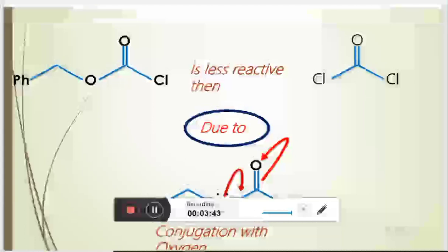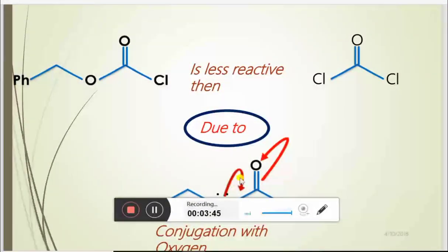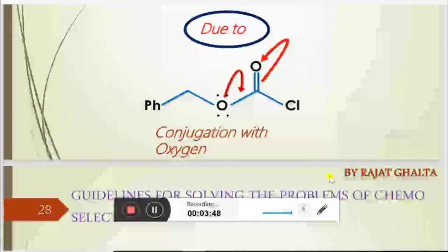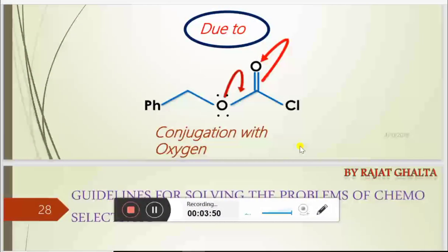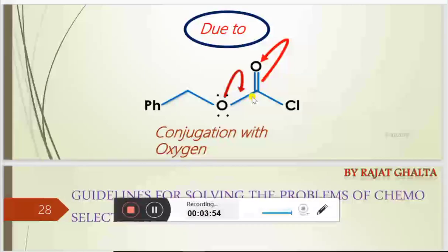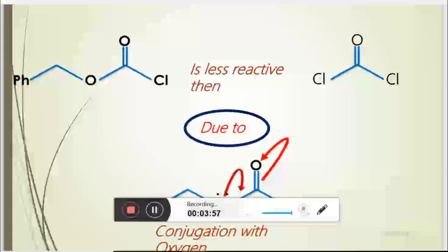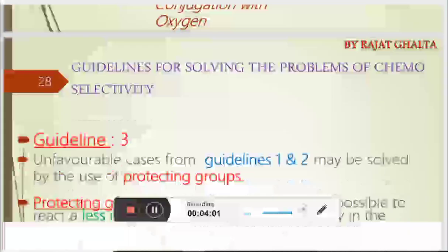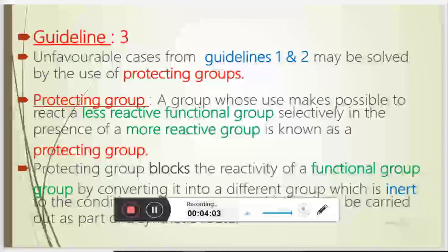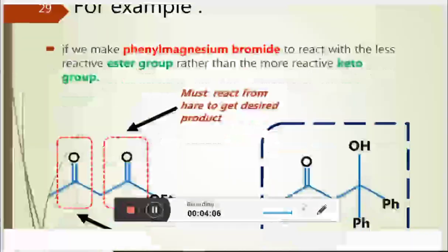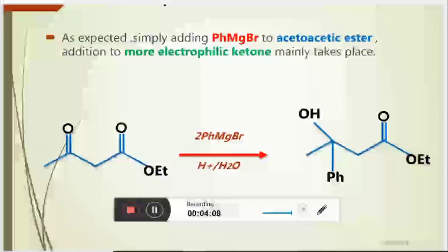You can also see the involvement of neighboring group participation, and then you would have the keto and enol forms. What happens next is that one product is formed preferentially over the other. These are some further examples you can examine one by one.